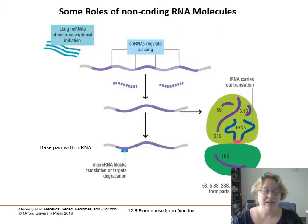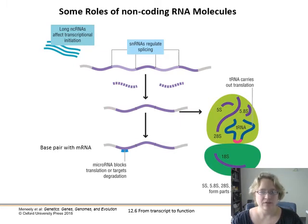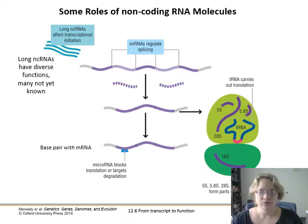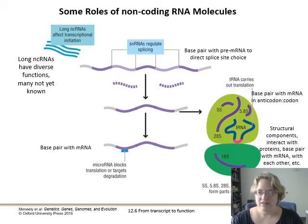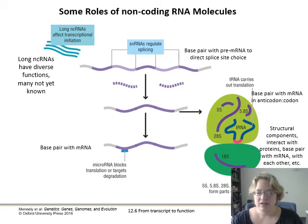To put these into context: long non-coding RNAs can affect transcription initiation — it looks as though there are more things at play beyond what we already talked about. Small nuclear RNAs help regulate where and when alternative splicing occurs. Transfer RNA pairs up with mRNA in the anticodon-codon loops in the ribosomes. And then there are pieces of ribosomal RNA — the 5S, 5.8S, 28S, and 18S — that are structurally part of the ribosomes that carry out translation.